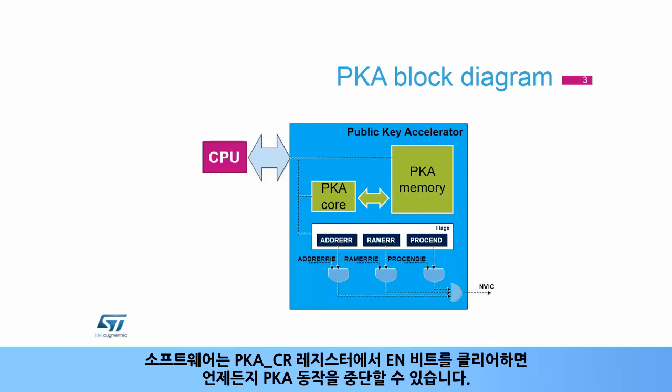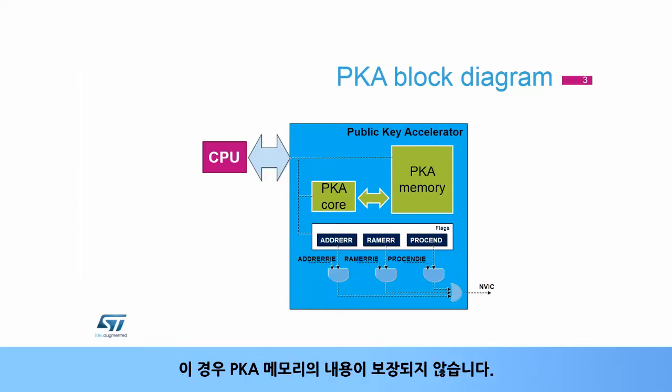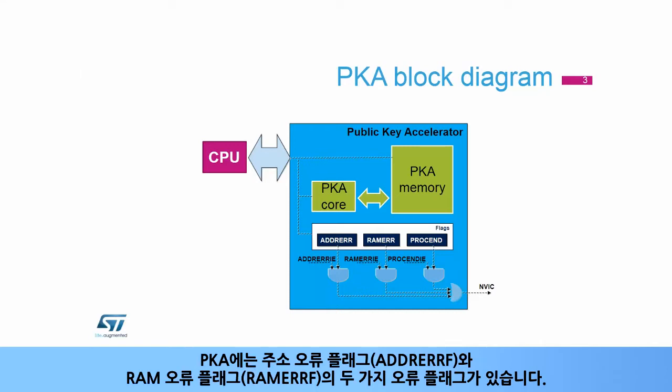Software can abort a PKA operation at any time by clearing the EN bit in the PKA CR register. In this case, the content of the PKA memory is not guaranteed. The PKA has two error flags: the address error flag (ADDRERRF) and the RAM error flag (RAMERRF).